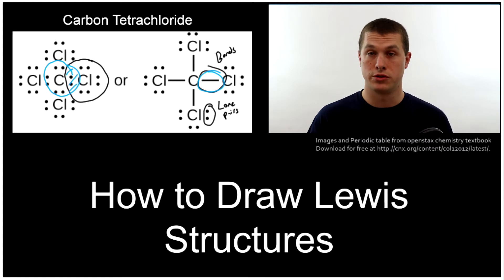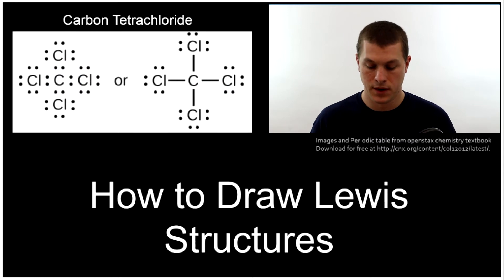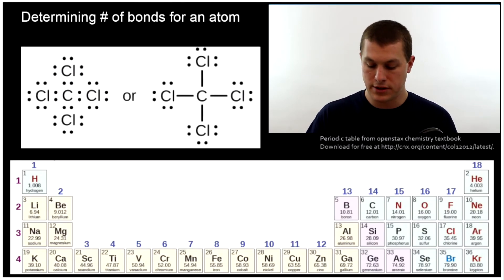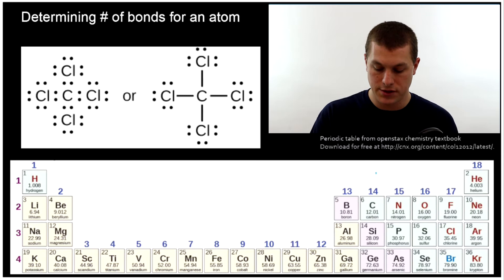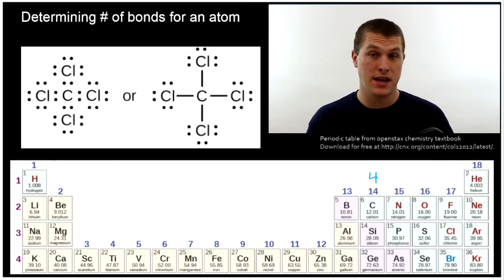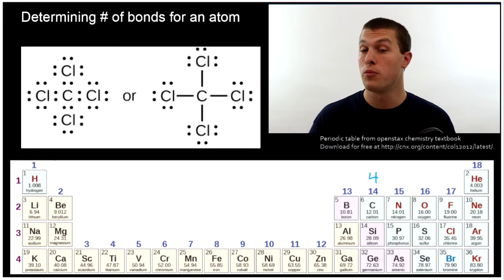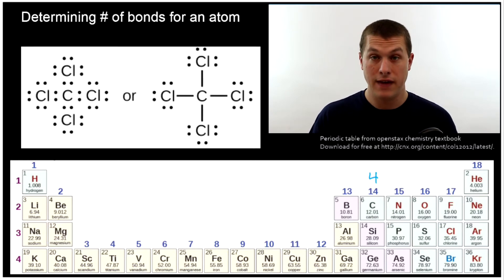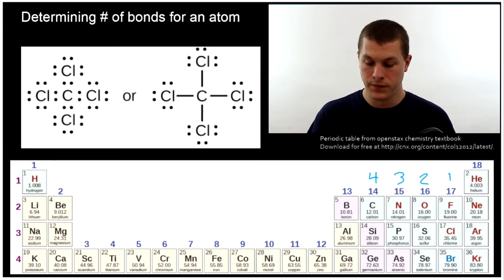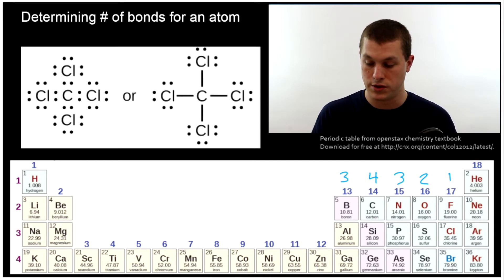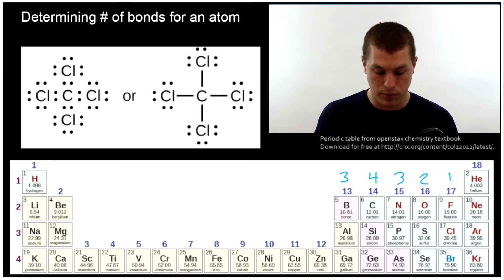If you want to be able to draw a Lewis structure, a really important thing is to start with knowing how many bonds each atom wants — we can do that from the periodic table. Carbon wants four bonds, because it has four valence electrons and needs four more to get eight electrons for an octet. Nitrogen has five valence electrons, so it needs three more; oxygen wants two, and fluorine wants one. Boron wants three bonds, beryllium wants two, and hydrogen wants one.